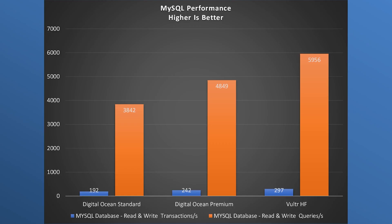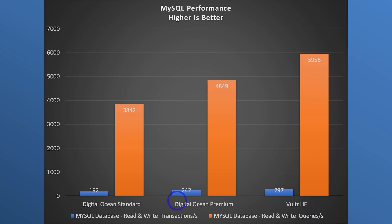Next I looked at database performance running Sysbench. Database performance is important particularly when you're running an e-commerce site with WooCommerce, because there are database transactions happening as the customer goes through the cart and checkout process. Going from DigitalOcean standard to DigitalOcean premium, you get about a 26% improvement in database performance. Going up to Vulture high-frequency, another 23% improvement. So it's definitely worth it if you're selling things using WooCommerce or running an online course. For static websites, as we saw on the Google PageSpeed test, there isn't really a big difference — if you're serving cached content, the scores were almost all identical and almost all perfect.